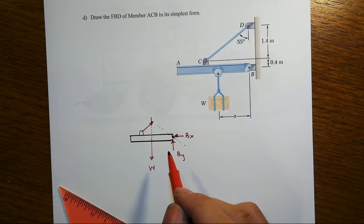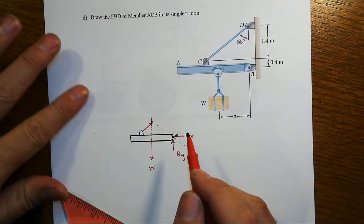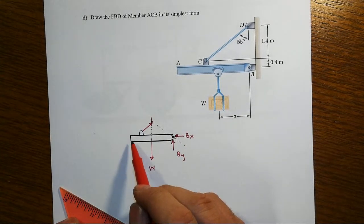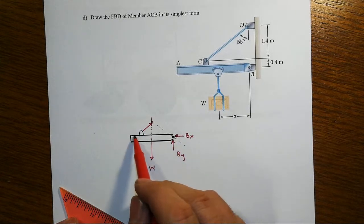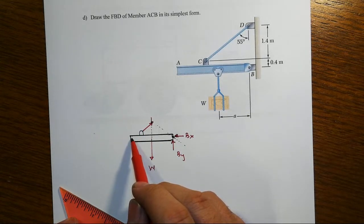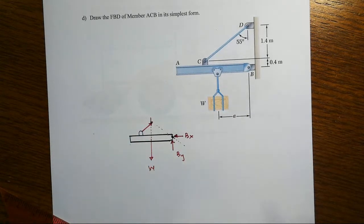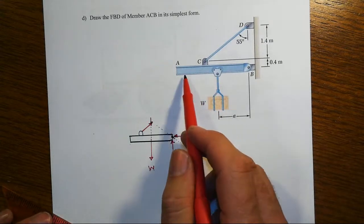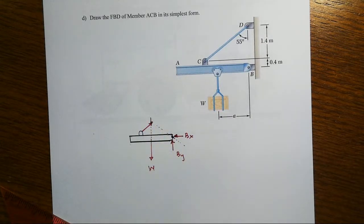And notice if the load gets way out here, the intersection point might end up being way down, even near the beam here. So there's some funky things that would happen as this gets way out there past point C.